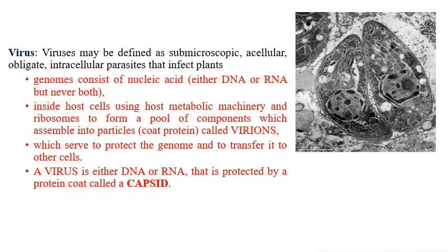Inside the host cell, the virus overtakes the host cell machinery and forces it to produce the components required by the plant virus. After entering the host system and overtaking its machinery, it forces the host to produce viral components rather than its own. These components are assembled in a particular place to form virions — a complete virus particle is called a virion. After generating more and more complete virus particles, the cell gets bursted and releases them outside.